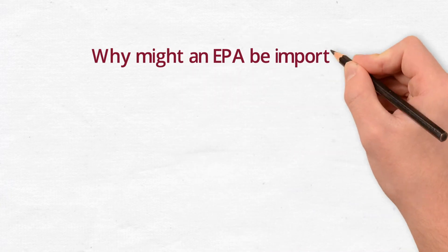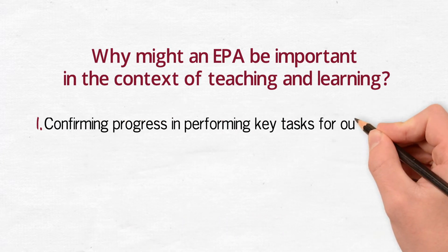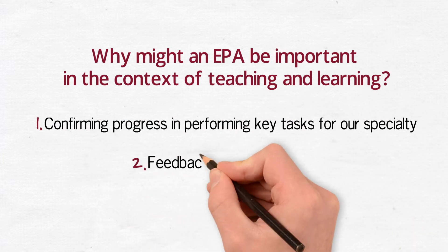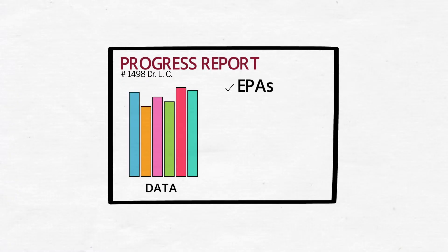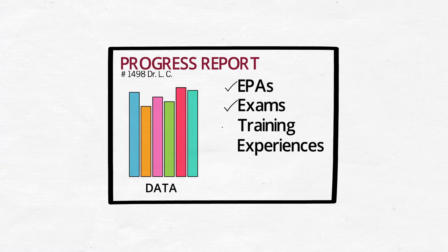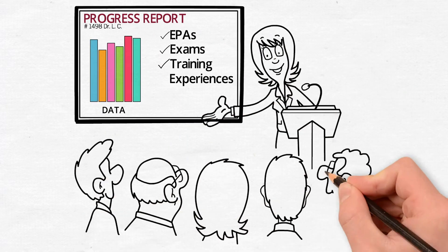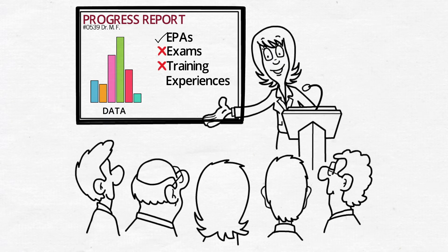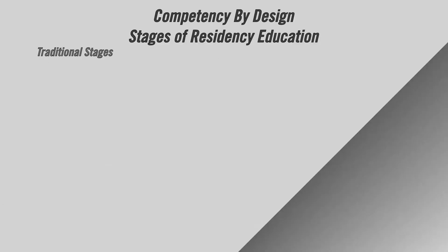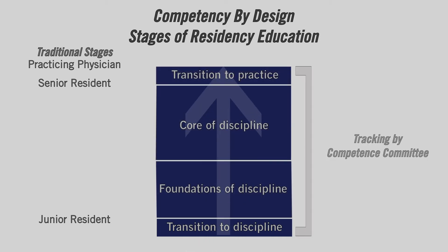Why might an EPA be important in the context of teaching and learning? Two reasons: number one, confirming progress in performing key tasks of our specialty, and two, for feedback. First, let's talk about confirming a resident's progress. In CBD, we want to be sure that each resident can competently perform tasks. By tracking them, our competency committee will have information to confirm who is making progress as expected and to identify early on if someone is needing more support in a given area. Residents are to achieve and teachers are to ensure that the EPAs are achieved by the end of each stage of training.